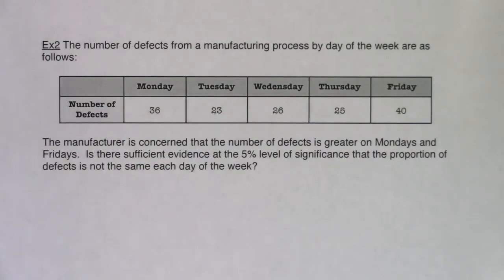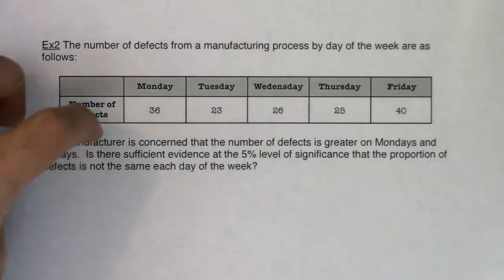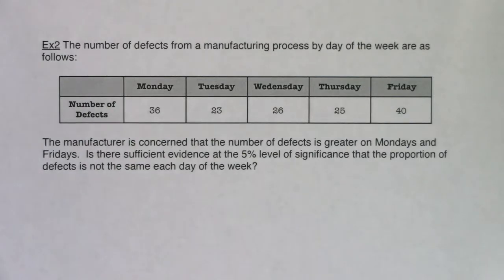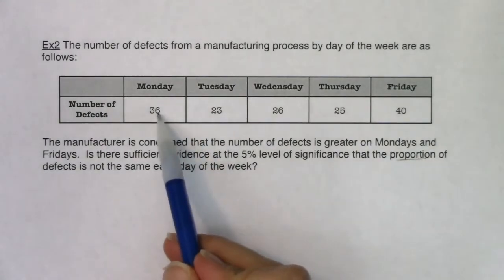Let's run our first chi-squared test together. As I read this, listen for what the variable is — we always want to start with that. The problem says: the number of defects from a manufacturing process by day of the week are as follows, with counts for Monday, Tuesday, Wednesday, Thursday, Friday. The manufacturer is concerned that the number of defects is greater on Mondays and Fridays. Is there sufficient evidence at the 5% level that the proportion of defects is not the same each day of the week? Notice the word 'proportion' — that tells us we're in proportion land.